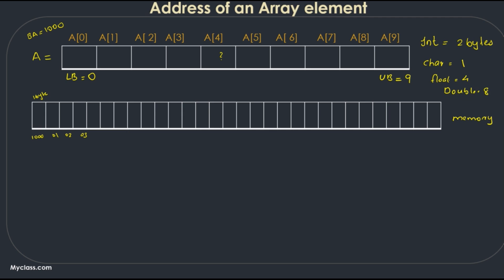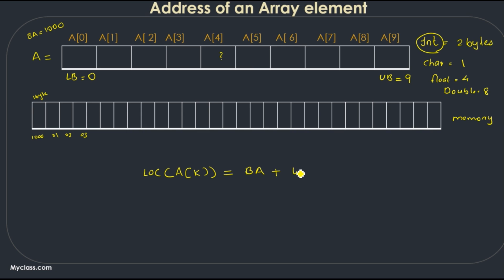This is also dependent on which type of compiler we are using. For basic C compilers: integer needs 2 bytes, character 1, float 4, and double 8. Let's assume this array is an integer array. We want to find the address of array element a[4], the fifth element. The location of a[k] is given by the equation: base address plus w multiplied by (k minus lower bound).